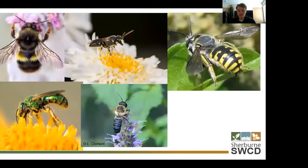Each one of these bee species has a preferred flower, type of flower, tree, or plant, and it needs these in order to survive. And those plants in turn also need these bee species in order for them to reproduce and survive as well.